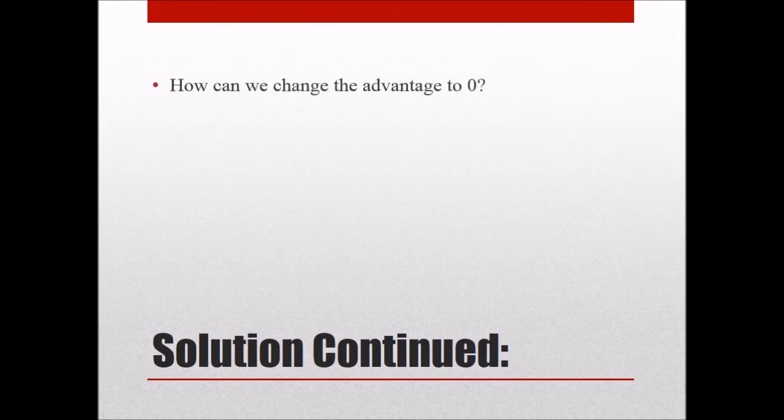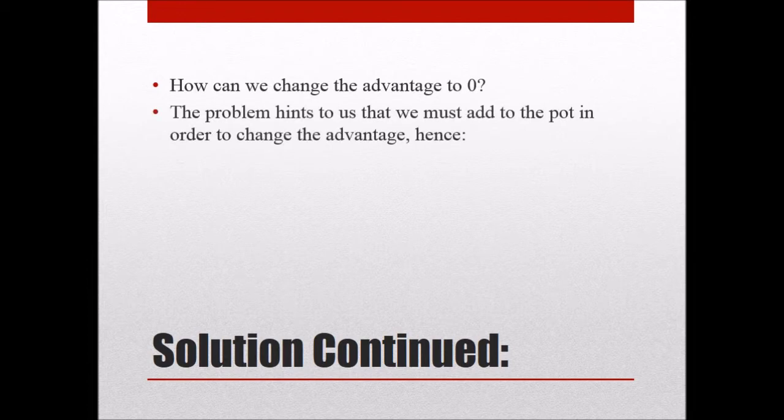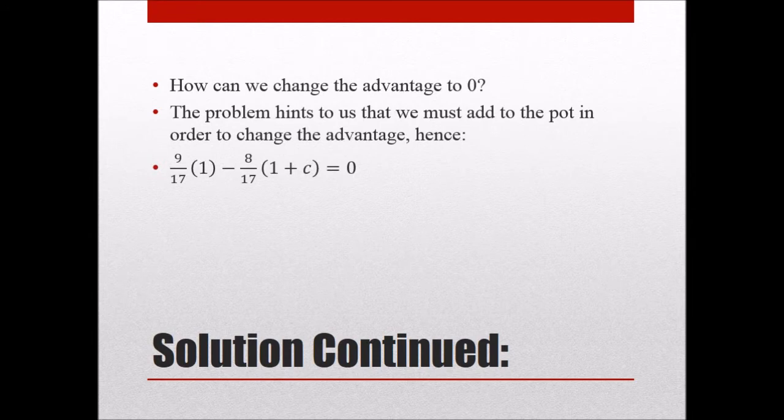So at this point, what we want to do is ask ourself is how can we change the advantage to zero? So right now there's an advantage for player one of one over 17. How can we change it so that there's no advantage? And the problem actually gives us the hint by saying that we want to add money to the pot in order to change the advantage.